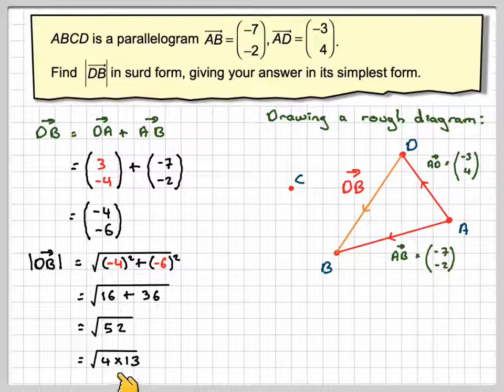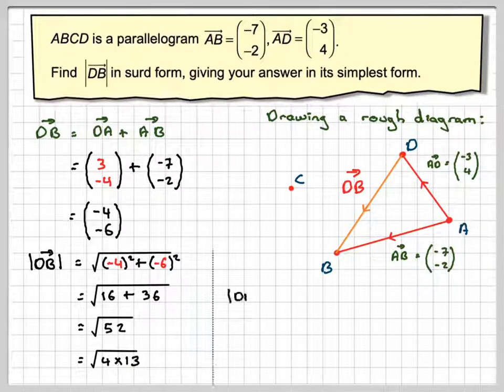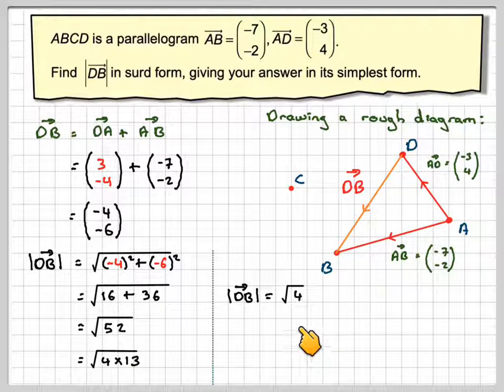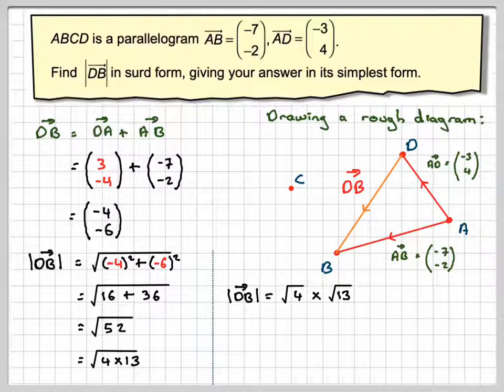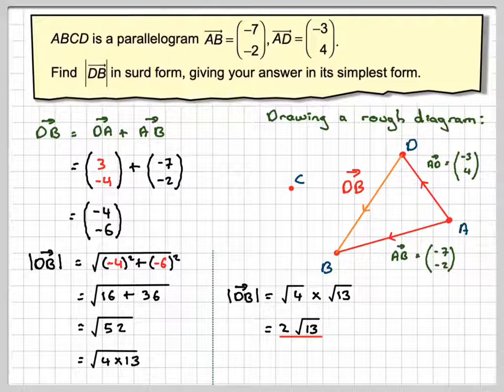So we can write this as square root of 4 times 13. So that's going to be the square root of 4 times the square root of 13, using the rule of indices. The square root of 4 is 2. So it gives me 2 root 13 as the final answer.